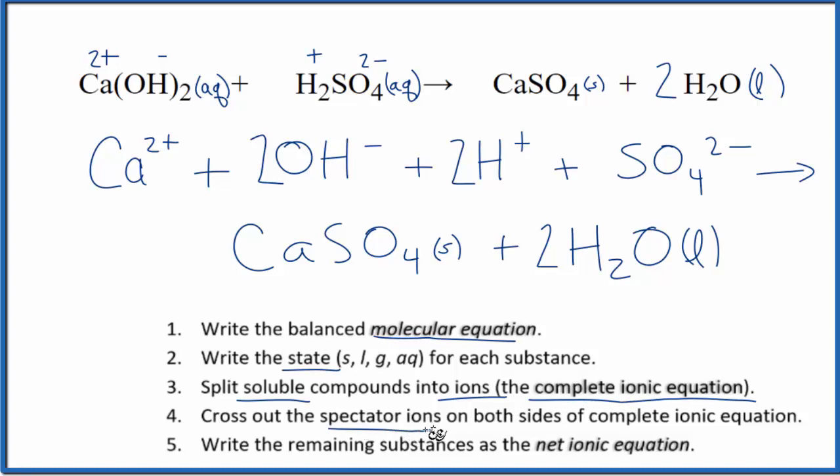We can now cross out all the spectator ions. These appear on both sides of the equation. So as I look through here, I have calcium, 2-plus. This calcium is bonded to the sulfate, so these are different. None of these show up. SO4 2-, that doesn't show up. So, then we have our calcium sulfate, that's a solid. And then we have our water. So this is an instance where the complete ionic equation and the net ionic equation, they're the same thing.